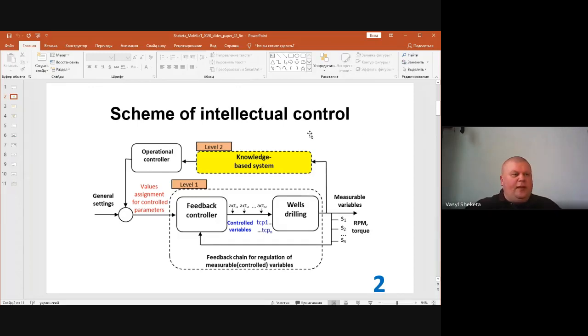This control is based on the feedback loop that starts with values assigned for control parameters, and these control parameters define the setting of various types of processes. When providing support for decision making for a drilling operator, such a system provides recommended values to set for control parameters and to get some ranges of material variables.